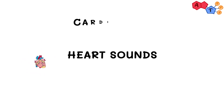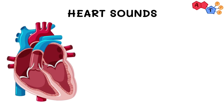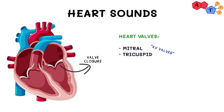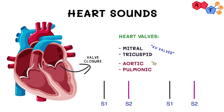Heart sounds happen as a result of valve closure — namely the atrioventricular valves, mitral and tricuspid — and this gives us the S1 sound. Then we have S2, which happens when the aortic and pulmonic valves close. So normally we have something like this.